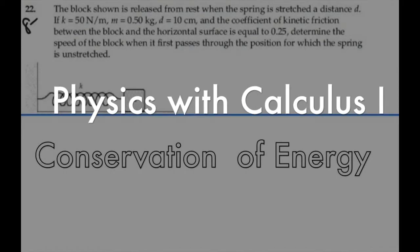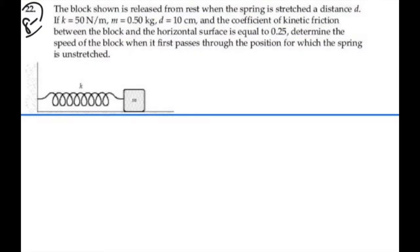This is problem 822. A block shown is released from rest when the spring is stretched the distance d. If k equals 50 N per meter, mass is 0.5 kilograms, d is 10 centimeters, and the coefficient of kinetic friction between the block and the horizontal surface is 0.25, determine the speed of the block when it first passes through the position for which the spring is unstretched.